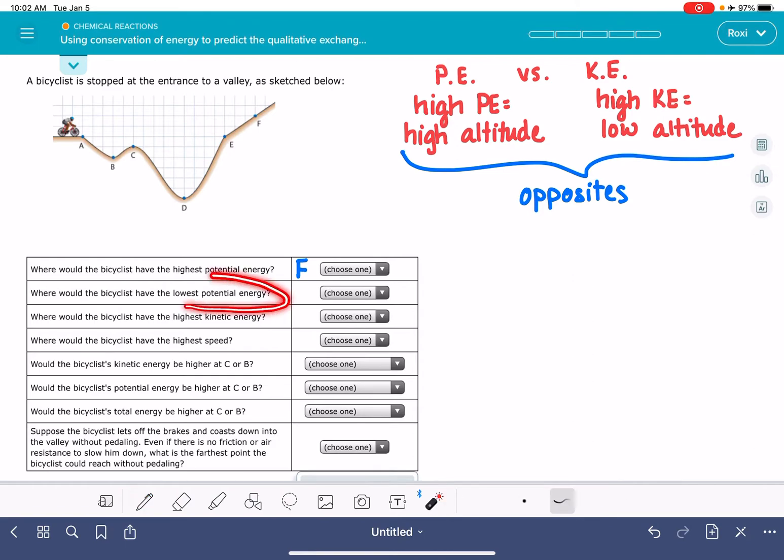Where does the bicyclist have the lowest potential energy? The lowest potential energy is going to be where the altitude is the lowest, so that's going to be point D, the lowest point. When you're down here at point D, there is no option to coast further down because you're already at the lowest point. And that's what potential energy is referring to. Can you coast down this hill?